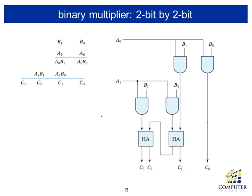The multiplier is directly implemented based on how we calculate multiplication by hand. Suppose we have two-bit numbers. We multiply each pair of digits and place the partial products in their appropriate positions, then move column by column, and finally add all partial products column-wise to produce the multiplication result.